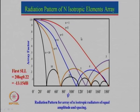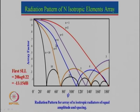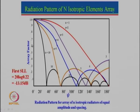As N increases the half-power beamwidth decreases, meaning directivity is increasing. This is consistent with aperture theory: directivity is given by 4πA/λ², where A is the area. Increasing number of elements increases the aperture area, which increases directivity. So decreasing half-power beamwidth means increasing directivity.